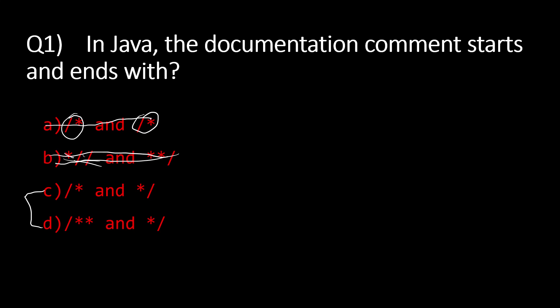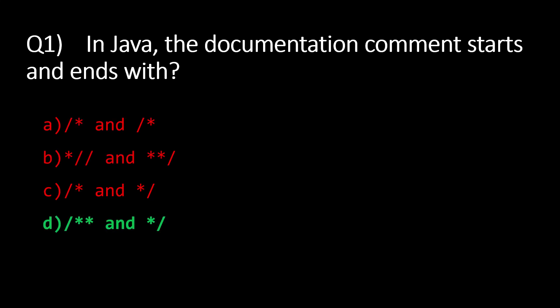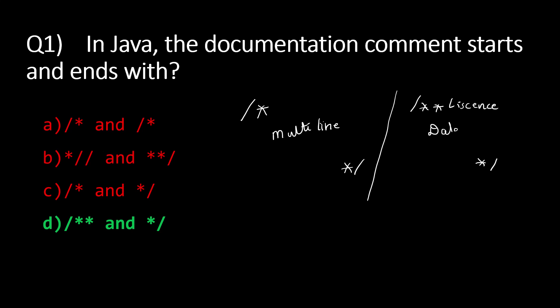Option C is actually a regular multi-line comment — it starts with slash-star and ends with star-slash. Option D is the right answer. A documentation comment in Java starts with slash-star-star and ends with star-slash. In editors like NetBeans or Eclipse, this documentation block contains information like the license, creation date, and author of the program.